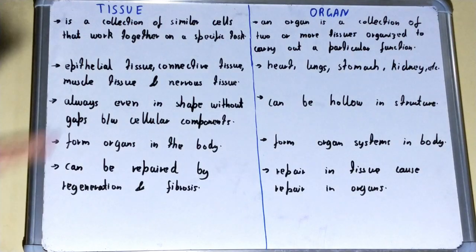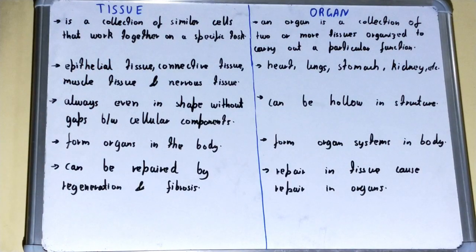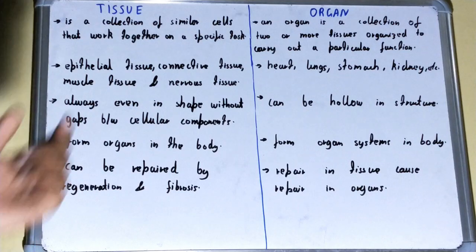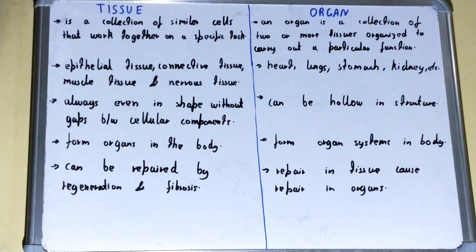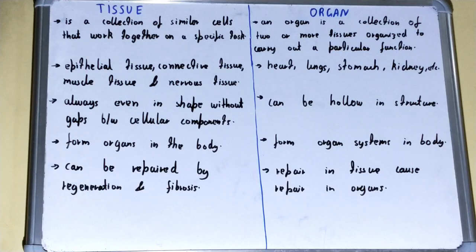If we talk about tissue, this is a collection of similar cells that work together on a specific task. So in the case of tissue, there are a collection of cells that work on a single specific task.